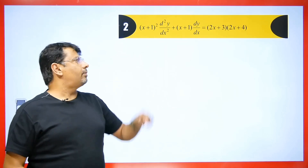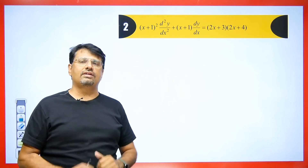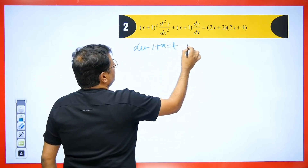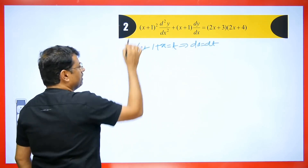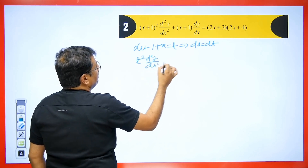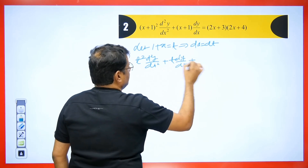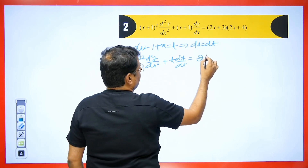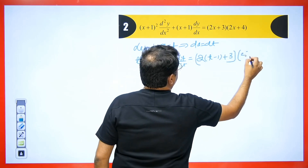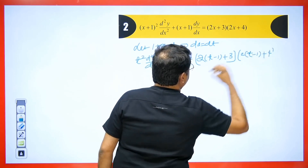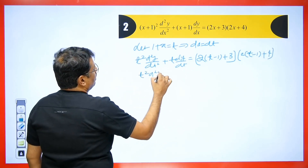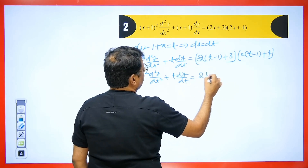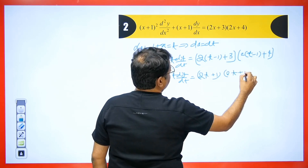So putting t − 1 + 3 and t − 1 + 4 for x, simplifying gives t² d²y/dt² + t dy/dt. When we simplify the right-hand side: 4t² + 6t + 2. We write let t = e^z or z = log t. The value of t² d²y/dt² is d(d−1)y, and t dy/dt is dy. Substituting gives d(d−1)y + dy = 4e^(2z) + 6e^z + 2.